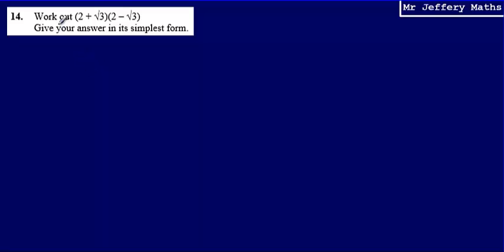This is question 14. Here I'm asked to work out (2 + √3)(2 - √3) and give my answer in its simplest form.